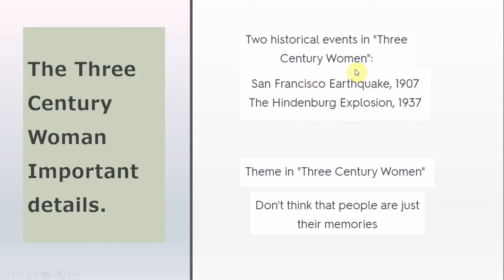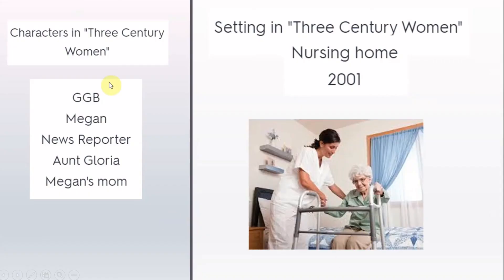What is the theme in The Three-Century Woman? Don't think that people are just their memories. The characters in the story are: GGB, Megan, a news reporter, Aunt Gloria, and Megan's mom. The setting of The Three-Century Woman is a nursing home in 2001.